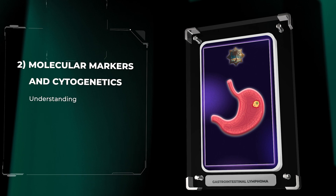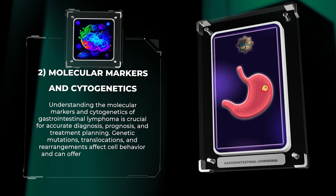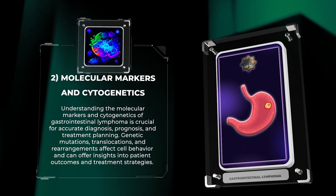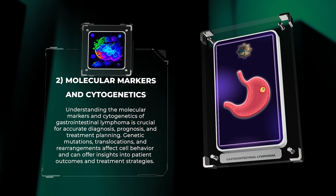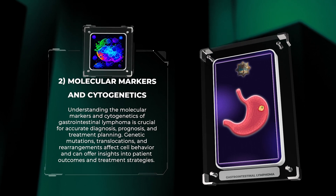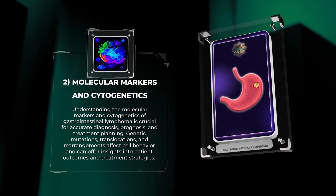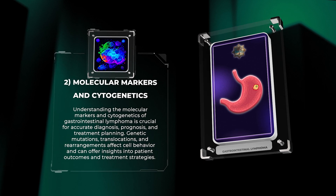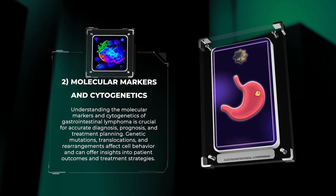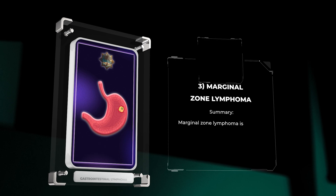Understanding the molecular markers and cytogenetics of gastrointestinal lymphoma is crucial for accurate diagnosis, prognosis, and treatment planning. Genetic mutations, translocations, and rearrangements affect cell behavior and can offer insights into patient outcomes and treatment strategies.